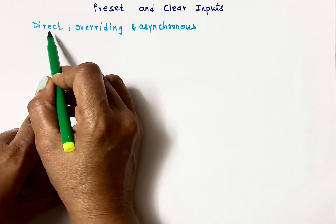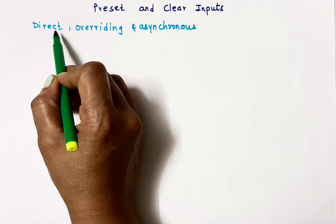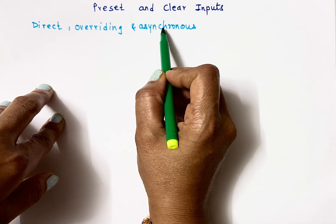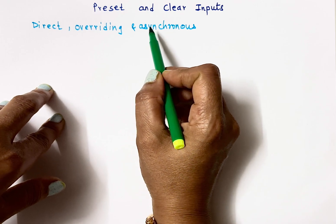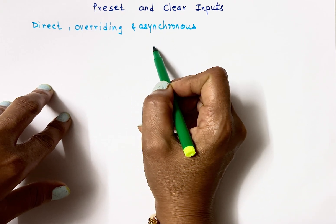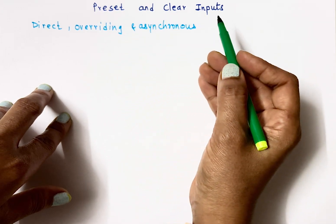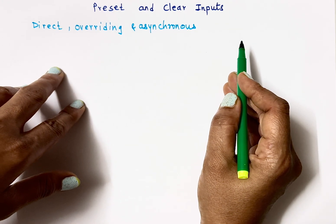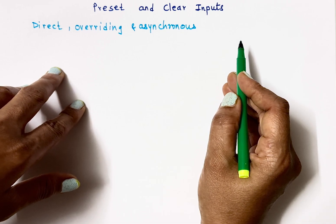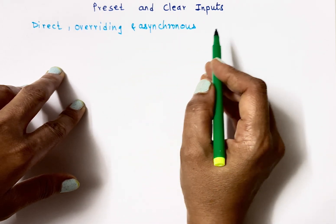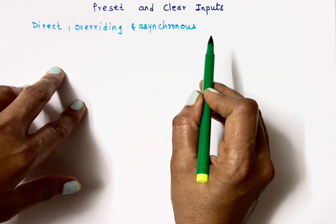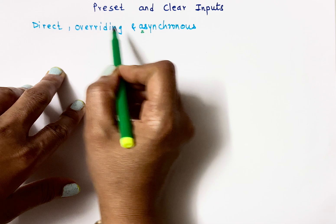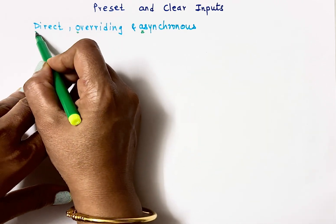Preset and clear inputs are called direct inputs, or they are called overriding inputs and asynchronous inputs. In a normal flip-flop, when we change inputs, the output changes only when the clock arrives. But when we change preset and clear inputs, the outputs change immediately — they do not wait for the clock, which is why they are called asynchronous, overriding, or direct inputs.